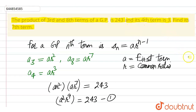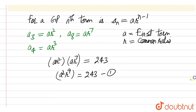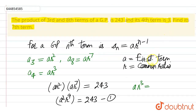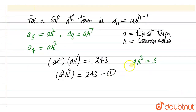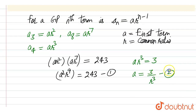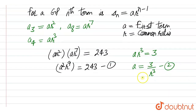We are also given that the fourth term is 3, so ar³ = 3. From this, we can get the value of a as a = 3/r³. Let this be equation number two. We can substitute this value into equation number one.